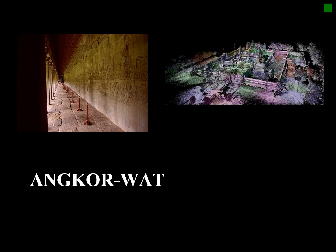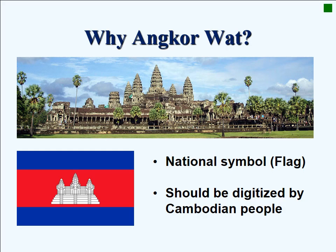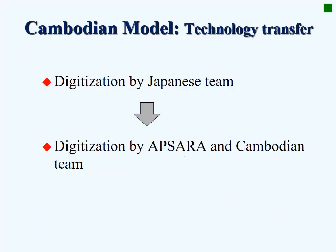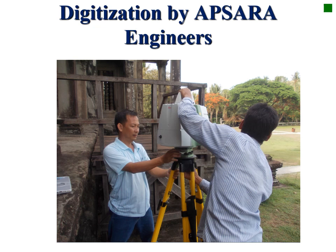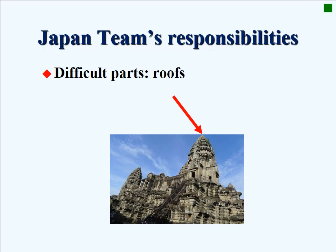The third example of modeling is Angkor Wat. Angkor Wat is a national symbol of Cambodia. We introduced a new schema for digitization by inviting Cambodian people to participate. We conducted technology transfer to Apsara-Cambodian researchers so that we could change the format of digitization from the Japanese team to the Cambodian team. This is a scene where Cambodian people are conducting digitization. Of course, our Japanese team conducted digitization of difficult parts, such as high viewpoints.